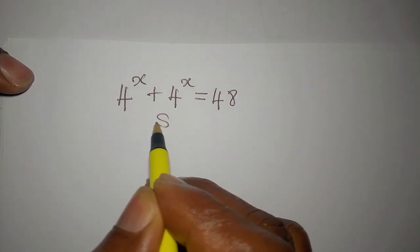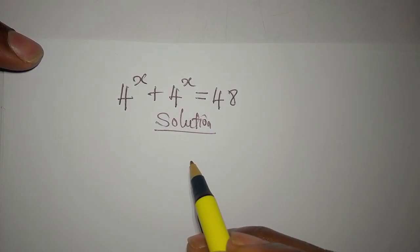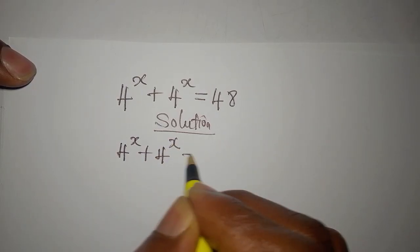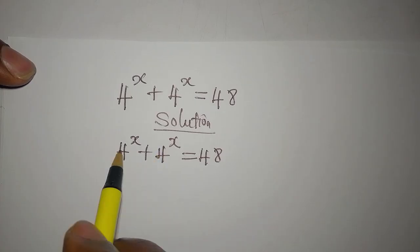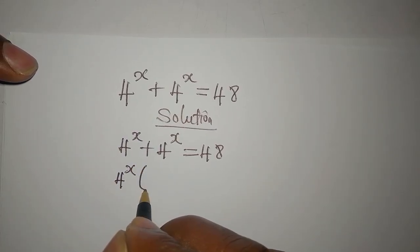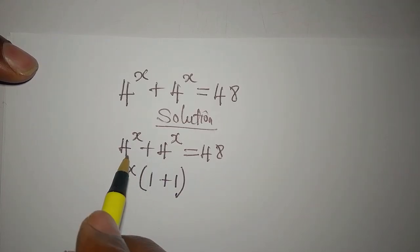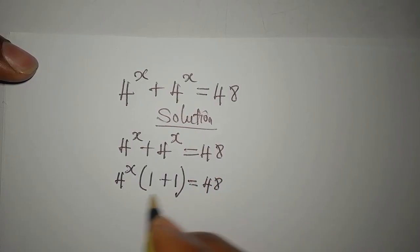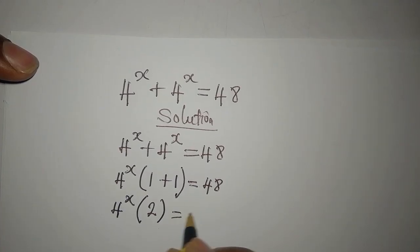Let's provide a solution to this problem: 4 to the power of x plus 4 to the power of x is equal to 48. We can factorize 4 to the power of x, so we have 4^x times (1 + 1). If you open the bracket it gives you 4^x + 4^x. This simplifies to 4^x multiplied by 2 equals 48.